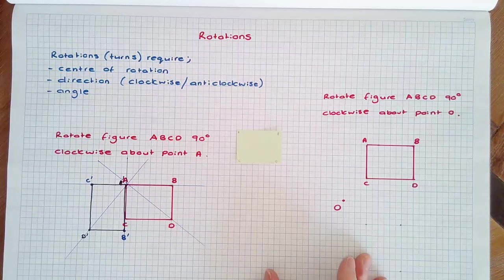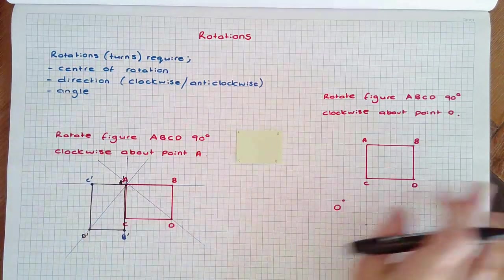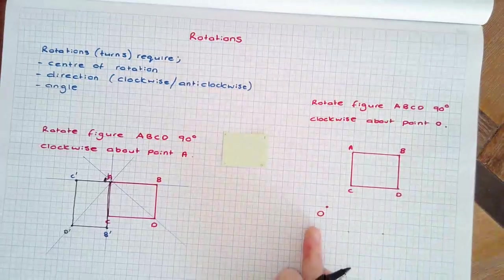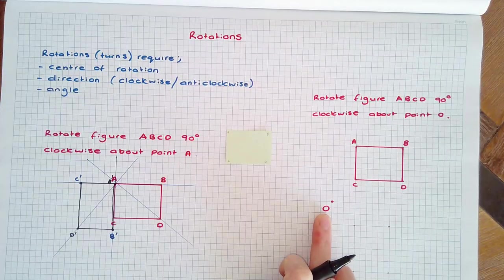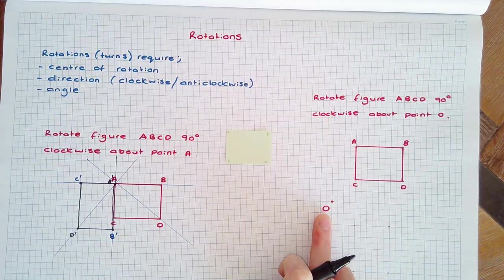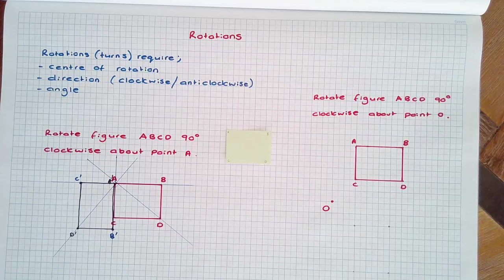Sometimes the centre of rotation is not the vertex of a figure. For example, if figure O in this diagram is the centre of rotation, and the figure is rotated 90 degrees clockwise, we again can use lines to help us with this.